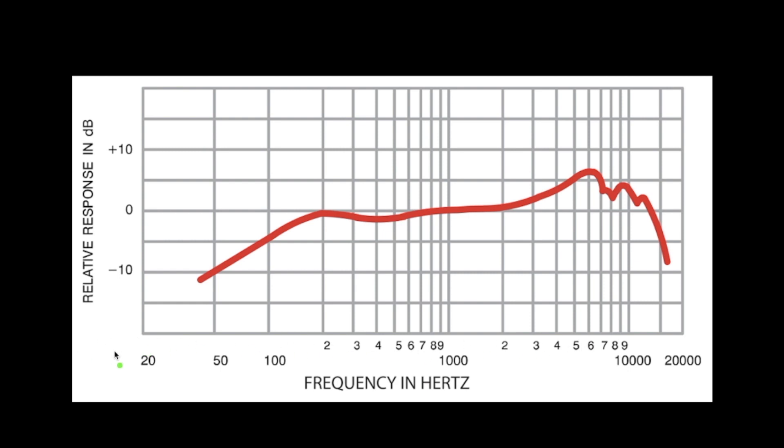If we look along the x-axis, we see these numbers. On the left side we're looking at 20, and all the way at the top we're looking at 20,000 or 20k. Those numbers represent frequencies measured in Hertz.